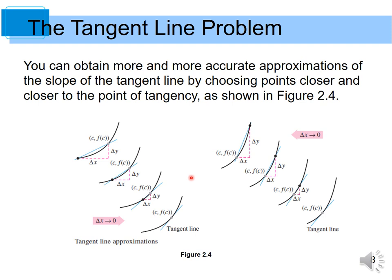Look at the figure below. The secant line crosses the curve at two points: the black point and the grey point. As these two points get closer and closer — that is, as delta x approaches zero — the distance between them is almost equal to zero. So the secant line at this limiting position is called the tangent line.